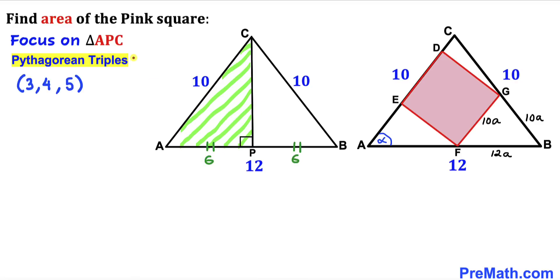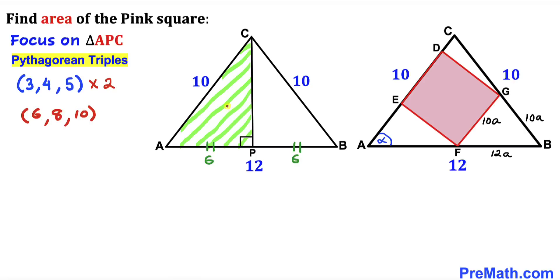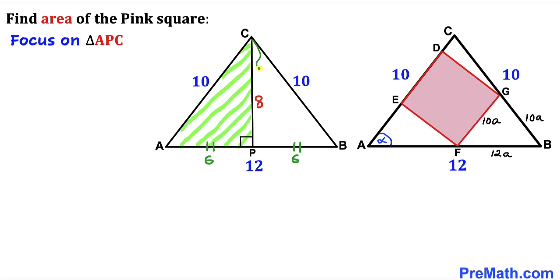Recalling the Pythagorean triplet 3, 4, 5 and multiplying by 2 gives us 6, 8, 10. So in right triangle APC, if one leg is 6 and the hypotenuse is 10, then the other leg CP equals 8 units.